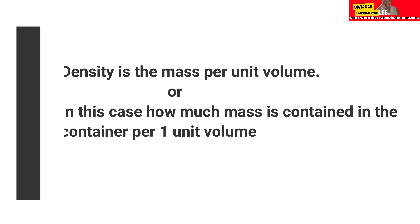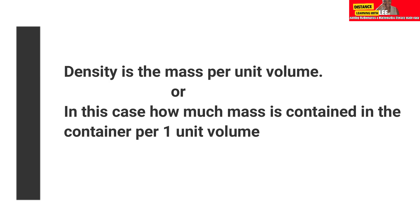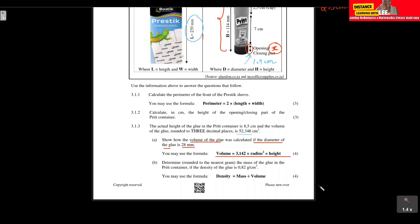So what is density? Density is basically the mass that an object has per unit volume — how much mass we have in a container per one unit of volume. So how are we going to determine the mass of the glue in the print container if we are given the density? We are given that density is equal to mass divided by volume.